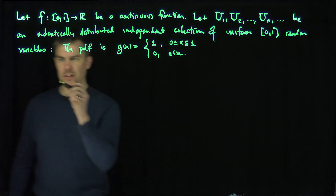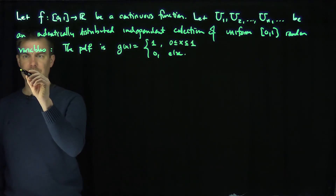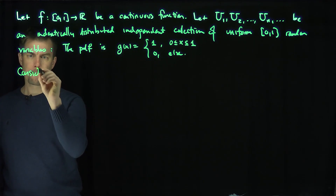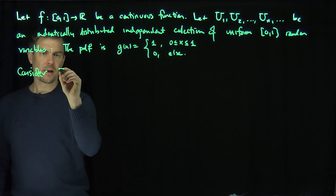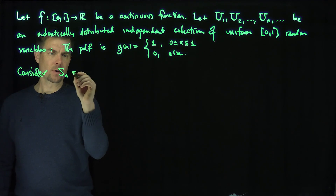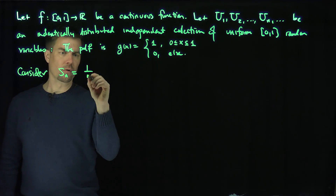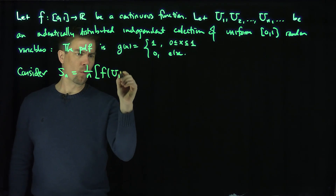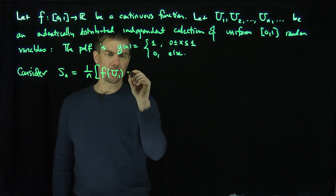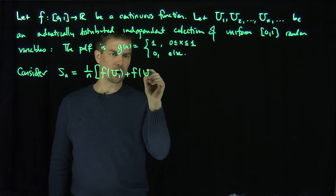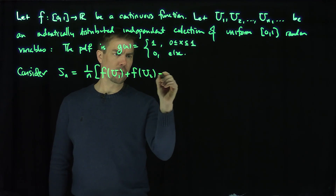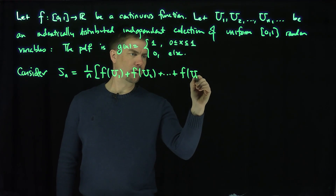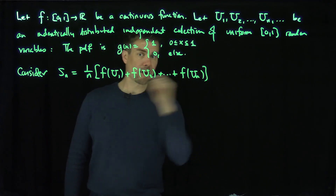And then what we're going to do is consider Sn, which is 1 over n times the sum: f(u1) plus f(u2) plus all the way down to f(un).